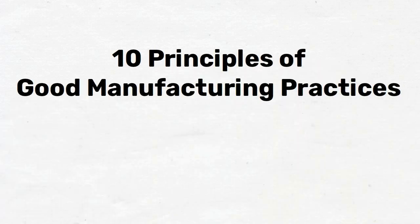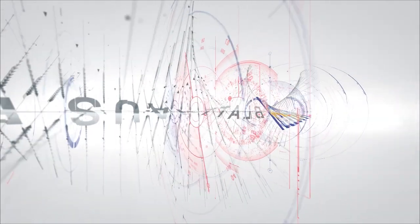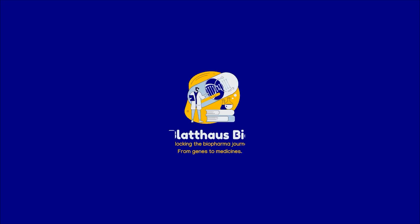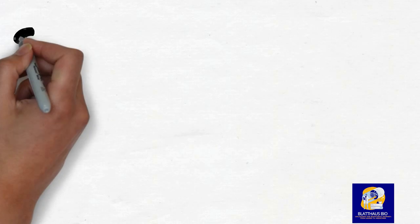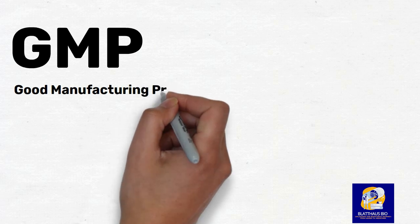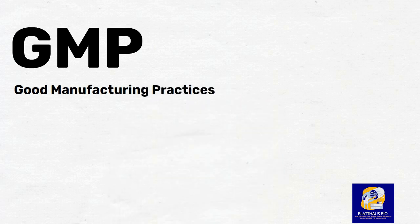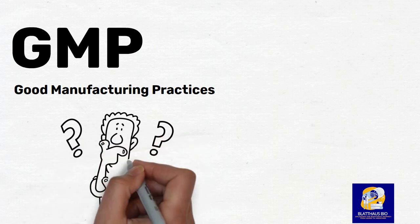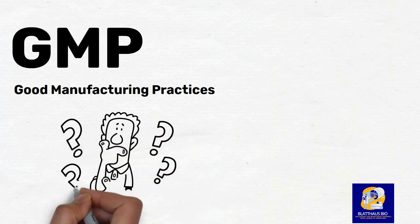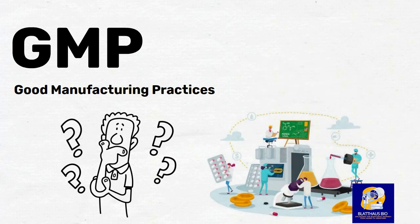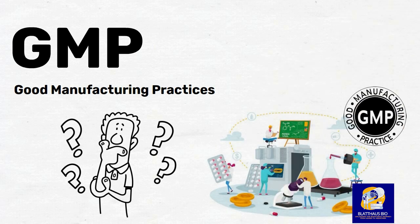10 Principles of Good Manufacturing Practices. GMP is a set of guidelines that ensure that the products manufactured in a facility meet the required quality standards and are safe for human consumption. GMP is a fundamental requirement for companies that manufacture drugs, medical devices, and dietary supplements. In this video, we will discuss the 10 principles of GMP and provide examples of how they are implemented in manufacturing facilities.